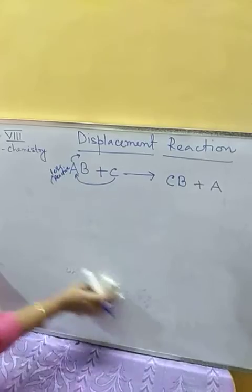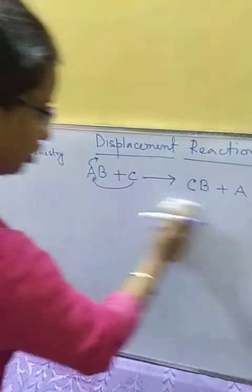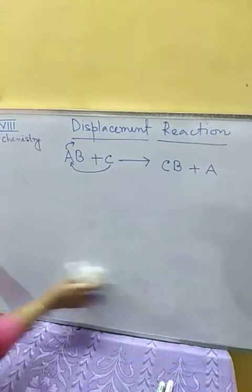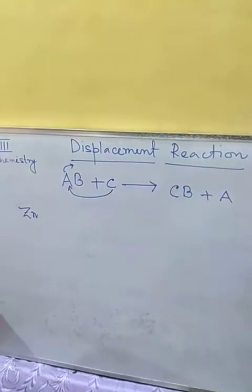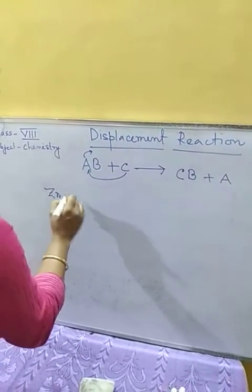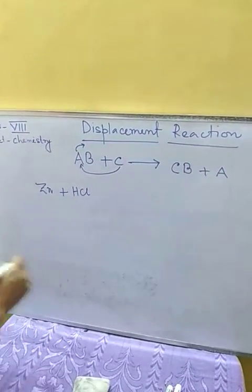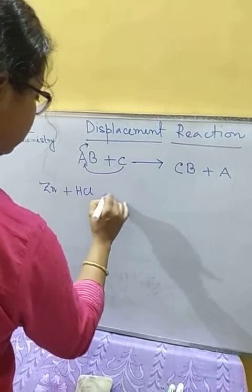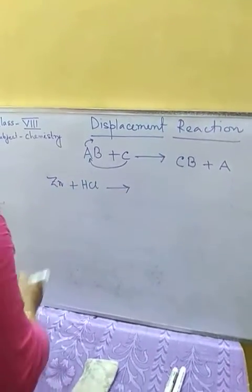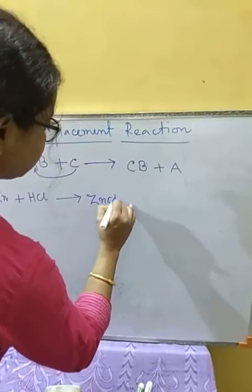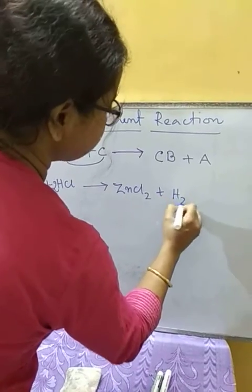For example, zinc is more reactive than hydrogen. If zinc reacts with dilute hydrochloric acid (HCl), zinc will displace hydrogen to produce zinc chloride (ZnCl₂). We need two moles of HCl and the product will also include hydrogen gas.